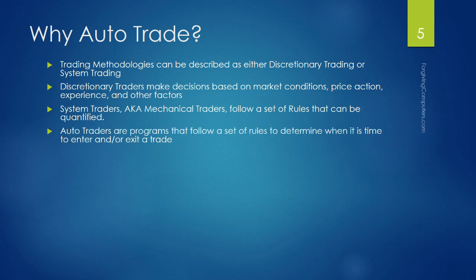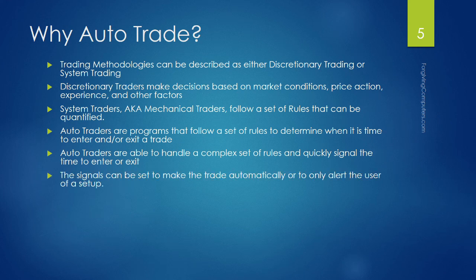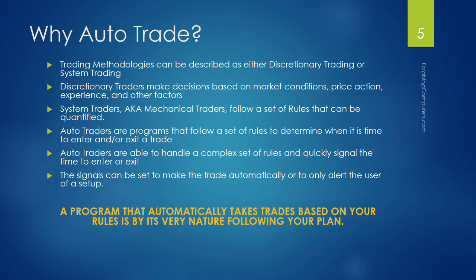Autotraders are programs that follow a set of rules to determine when it's time to enter and or exit a trade. Autotraders are able to handle a complex set of rules and quickly signal the time to enter or exit. The signals can be set to make the trade automatically or to only alert the user of a setup. A program that automatically takes trades based on your rules is by its very nature following your plan.